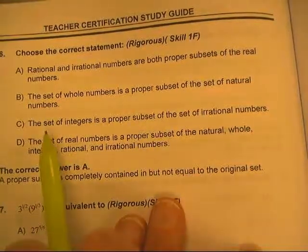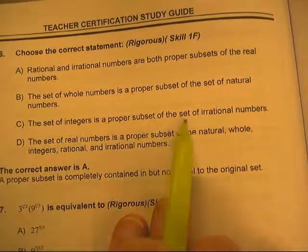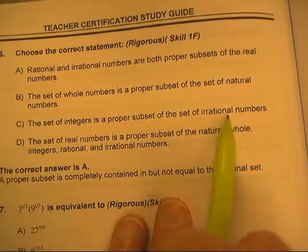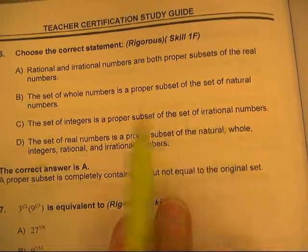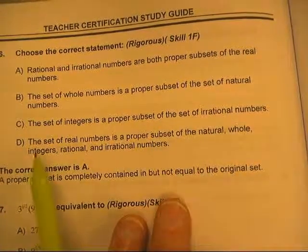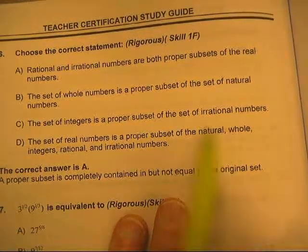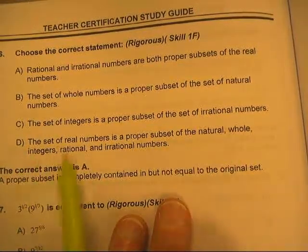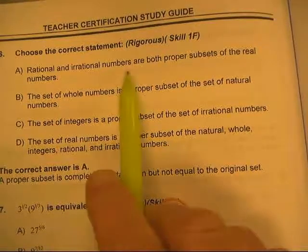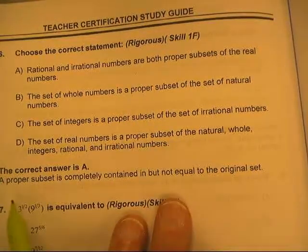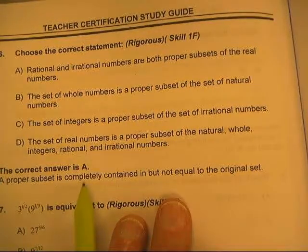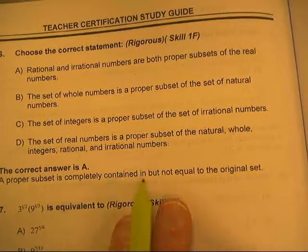The set of integers is a proper subset of irrational — that would work. The set of real numbers is a proper subset of natural, whole, integers, rational, irrational? The answer is actually A.